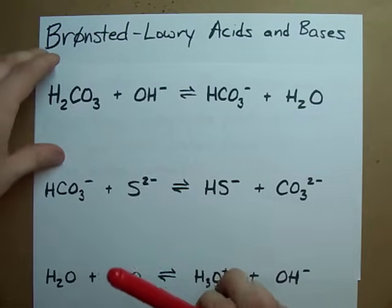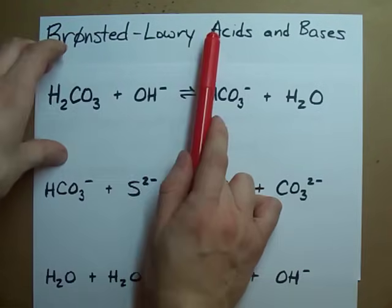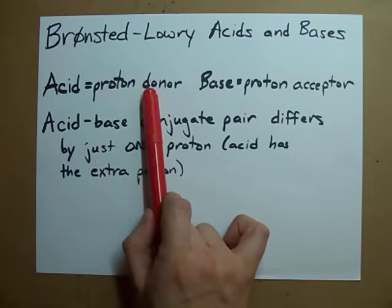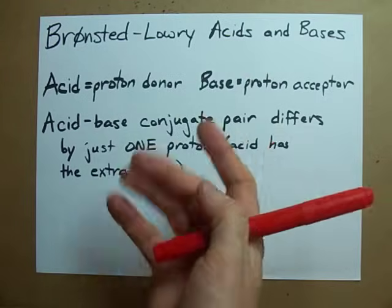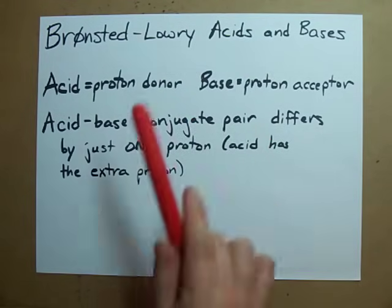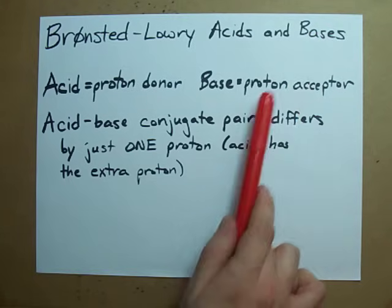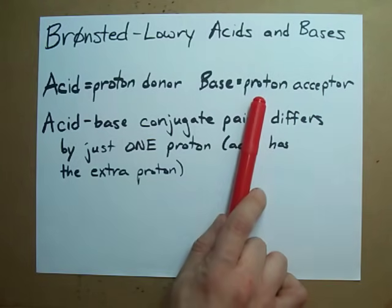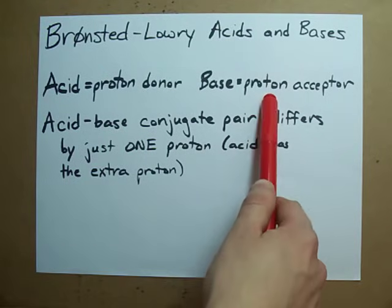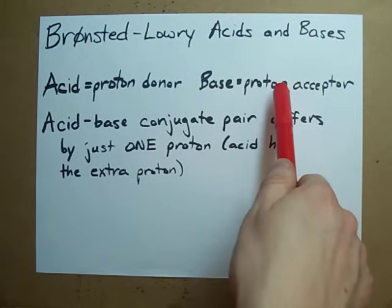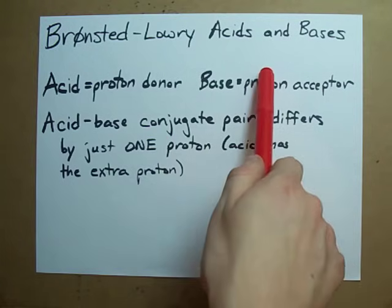Here's how you're going to remember it. Brønsted-Lowry acids are proton donors, as in they can give away protons or H's. Brønsted-Lowry bases are proton acceptors. There needs to be a lone pair of electrons on an atom for it to accept an H+, or proton.